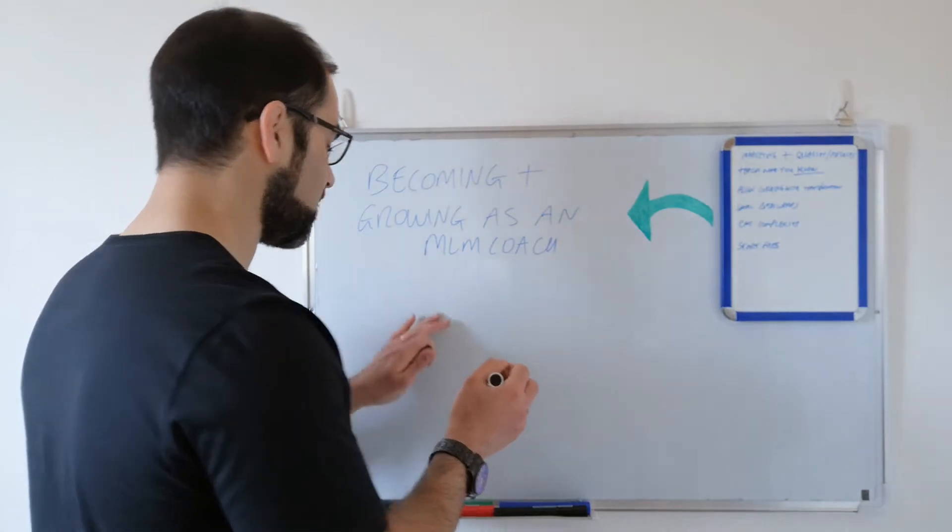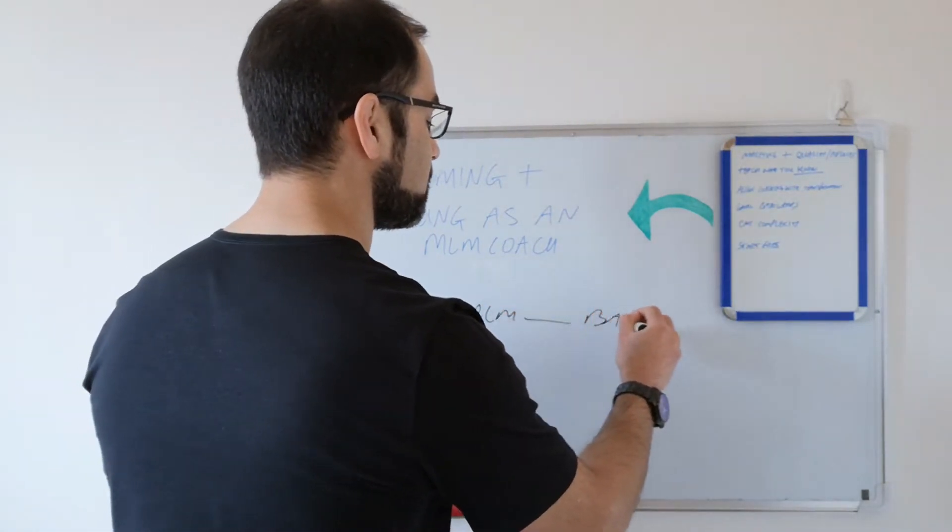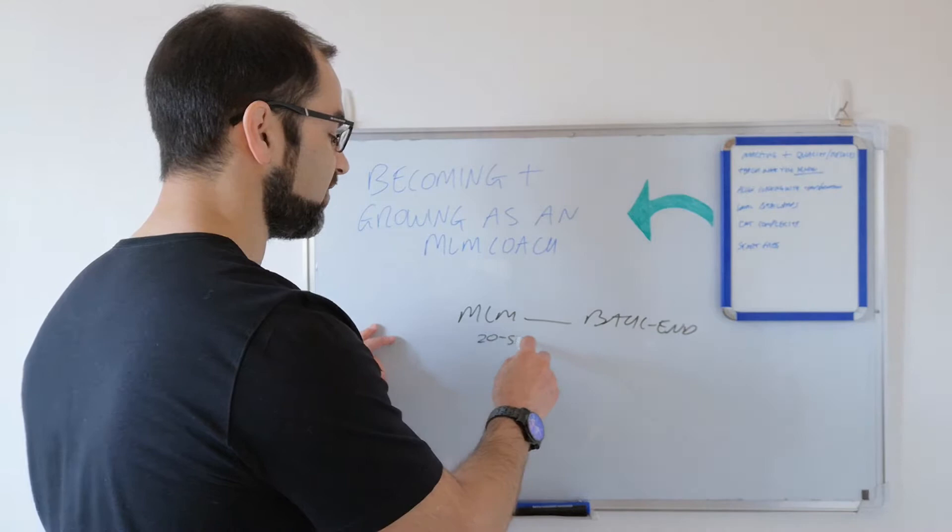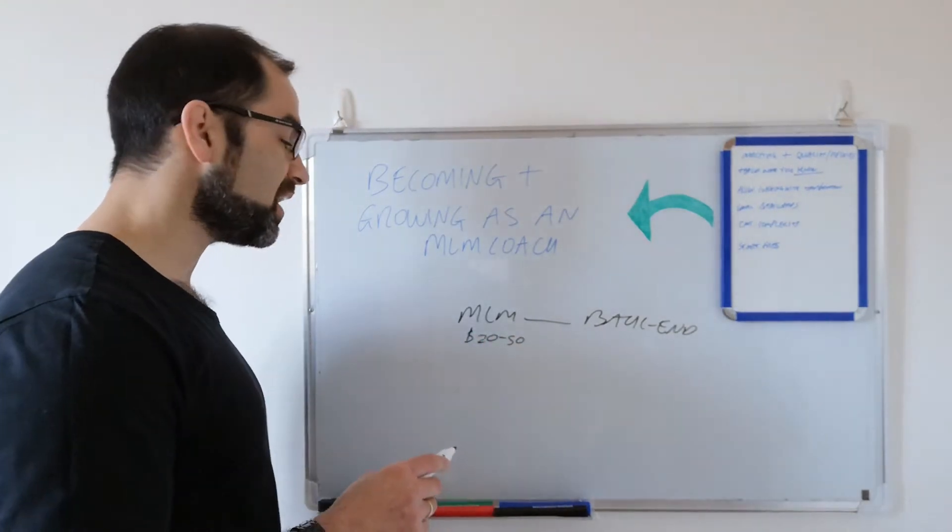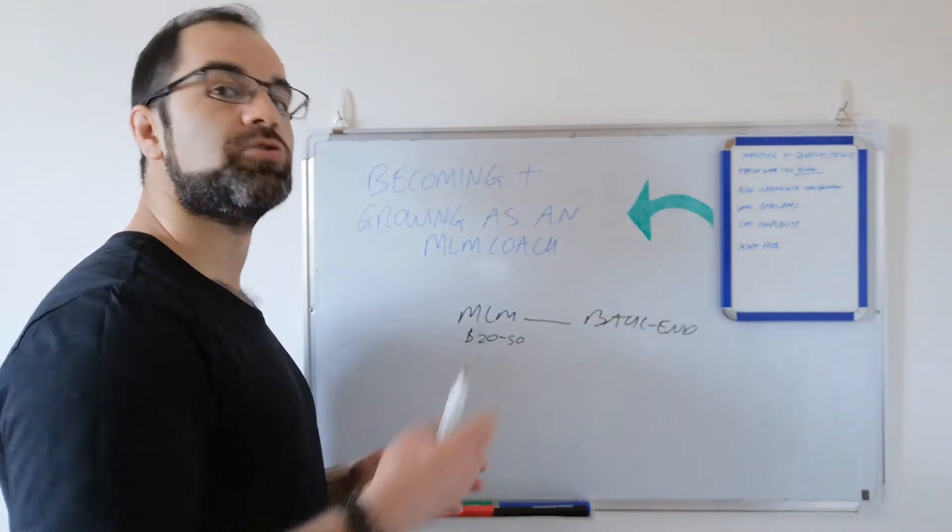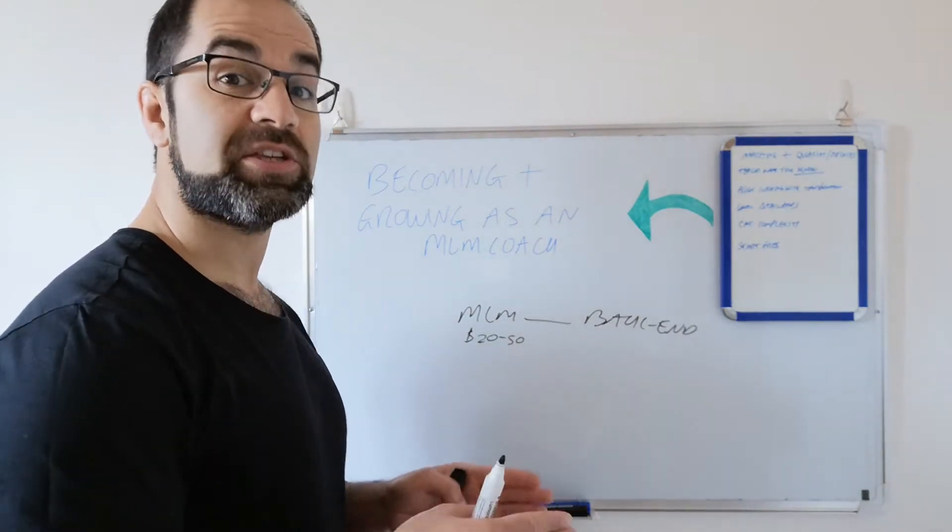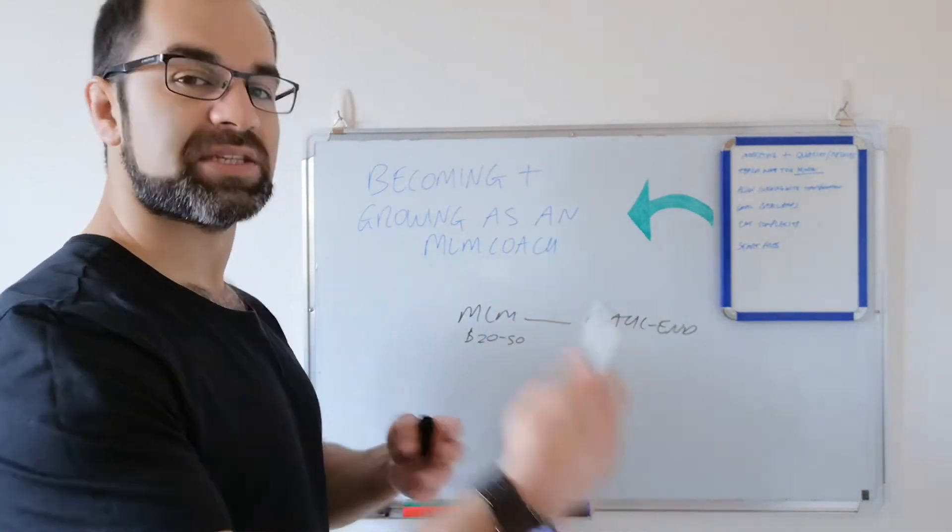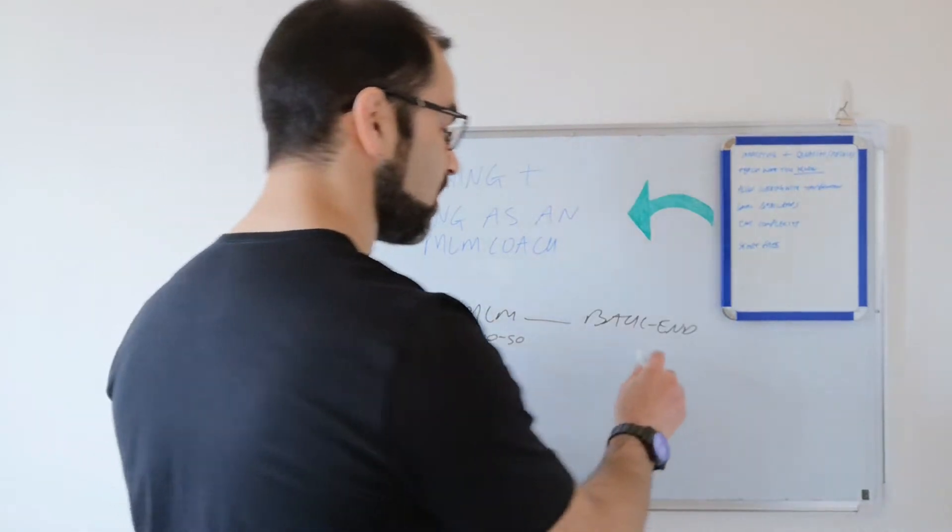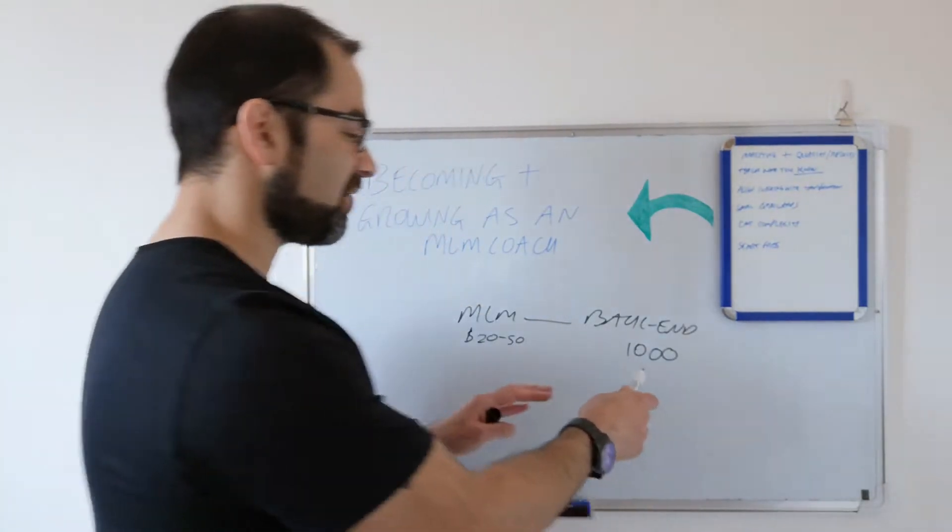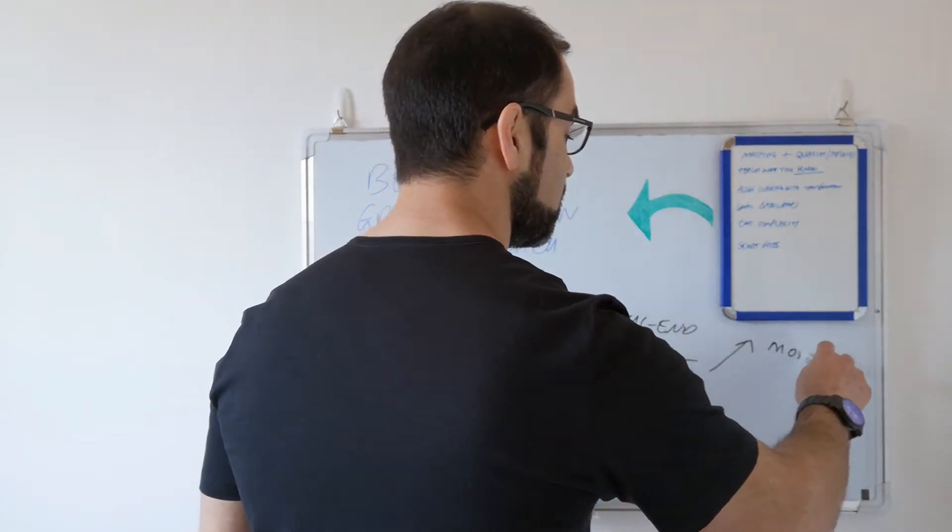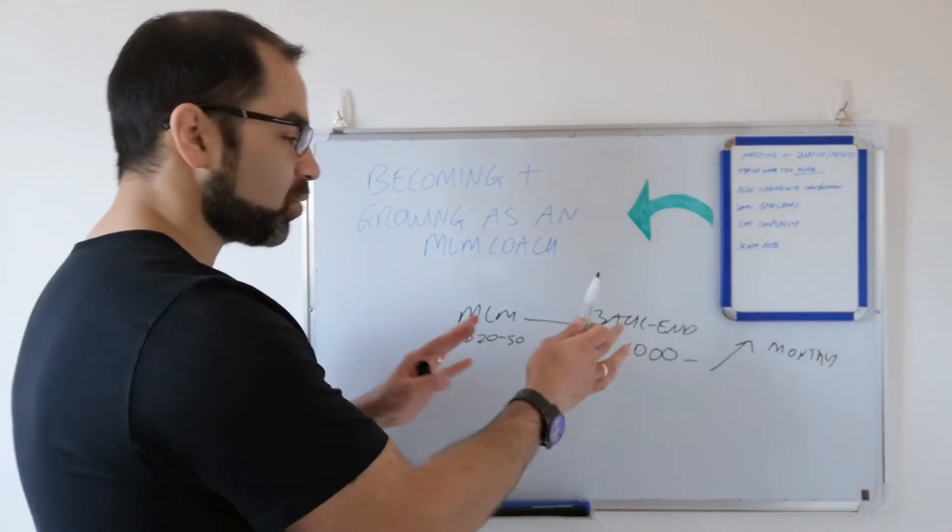The first thing to notice is MLM is what we call back end. Most people, when they sign up someone in their network marketing business, they get between $20 and say $50. Even if they get higher than that, they're having to sell, let's say, a $1,500 product to maybe make a $100 commission. So the margins are very small at the front end because they need to leave space in the compensation plan for you to get paid on multiple levels.